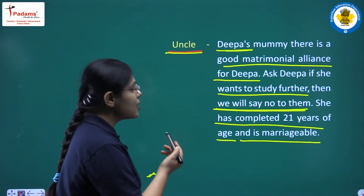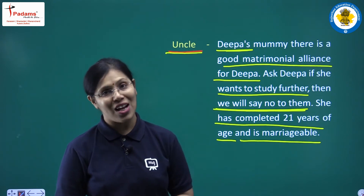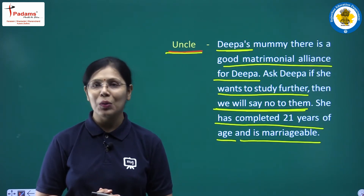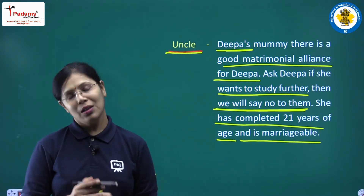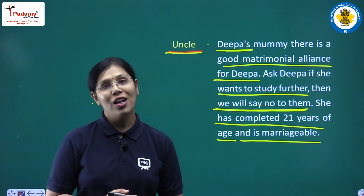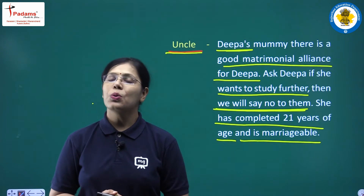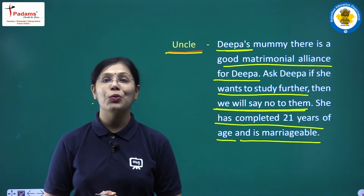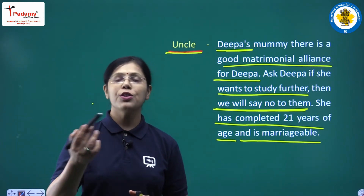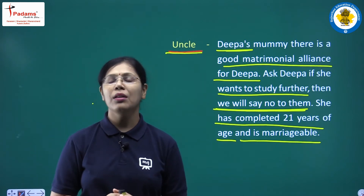Deepa has completed 21 years of age, so she is now of marriageable age. Children, remember: the marriageable age is fixed by our law. According to the law, the minimum age for girls is 18 years and for boys is 21 years. Marriage before this age is illegal. Here, the uncle was asking about the matrimonial alliance and said that if Deepa wants to study further they will decline; otherwise she can get married.